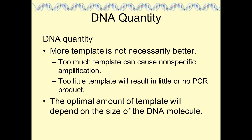DNA quantity is also important to optimize. Adding more template is not necessarily better — too much can cause nonspecific amplification, while too little gives no PCR product. The optimal amount depends on genome size: a small genome requires less template to achieve adequate copies of the target, while a large genome like the human genome requires a little more DNA to ensure the gene of interest is represented.